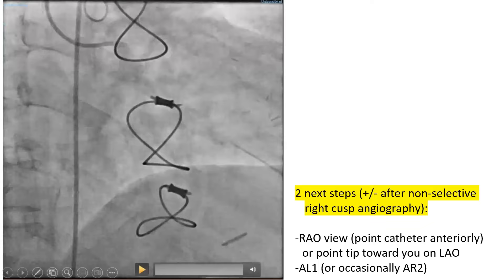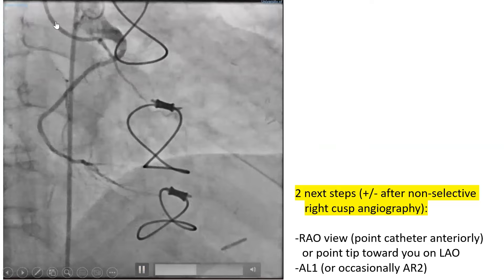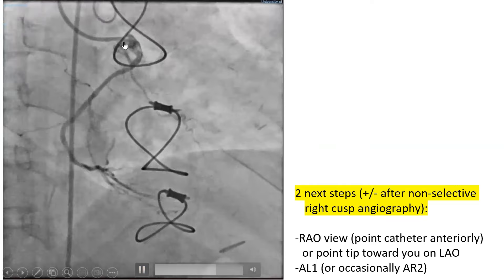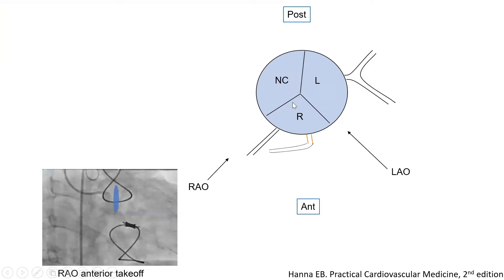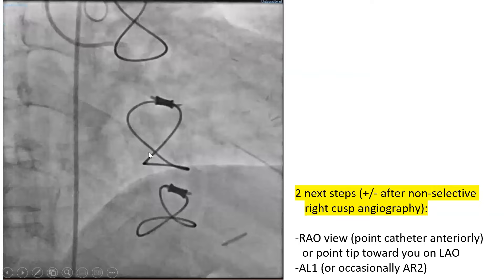Here is a case using an Amplax left 1 catheter in RAO view, aiming the catheter anteriorly to engage an anterior-origin RCA. A pitfall with RAO view: as you maneuver, your catheter may jump to the left cusp without you knowing. I've learned to use LAO view to confirm I'm in the right cusp, make the AL catheter point at me, and then briefly use RAO to confirm it's pointing anteriorly. Two steps: make the tip point toward you in LAO, and use AL1 or occasionally AR2.